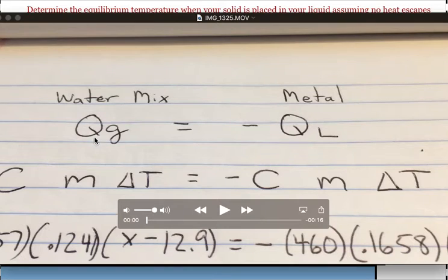The way you start this out is you realize that the heat that's gained by the water mix is going to equal the heat that is lost by the metal. Since neither object is changing phase, you start with CM delta T for the water equal to negative CM delta T of the metal. The metal is negative because it's losing energy.